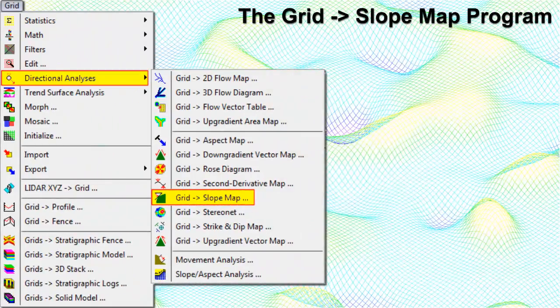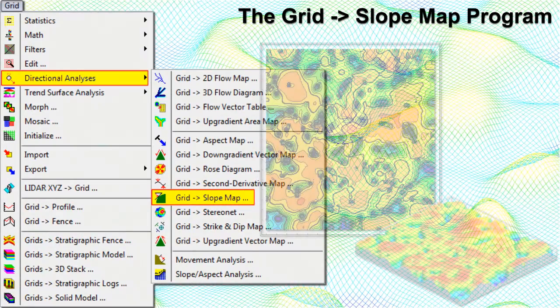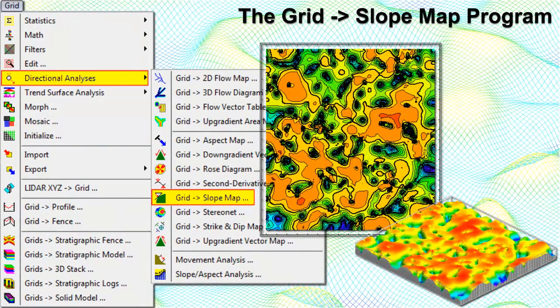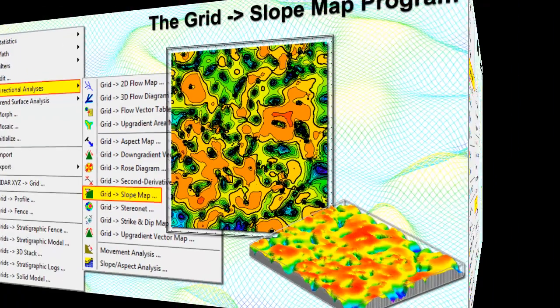The Grid to Slope Map program reads a grid or surface model and computes the changes in Z values — such as elevations, concentrations, etc. — between neighboring nodes. The resultant slope values are stored in a new grid model with options for generating a 2D map, 3D surface, and a grid statistics report.